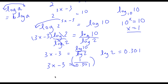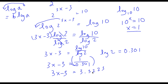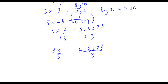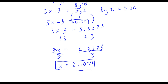1 over 0.301 is approximately equal to 3.3223. So now we have 3x minus 3 is equal to 3.3223. I can add 3 on both sides, so 3x is equal to 3 plus 3.3223, which is 6.3223. Now I can divide both sides by 3 to isolate x, and x is equal to 6.3223 divided by 3, which is approximately 2.1074.